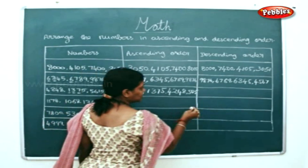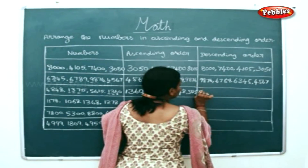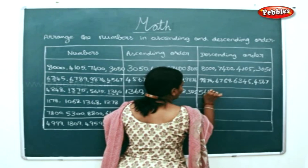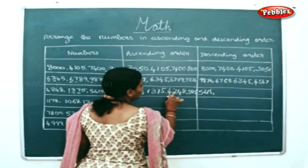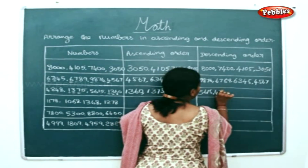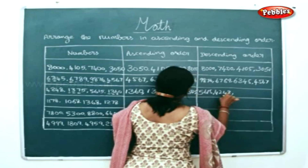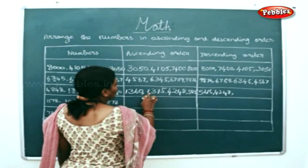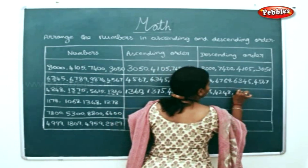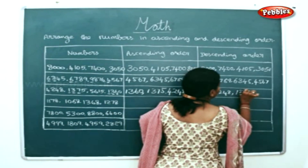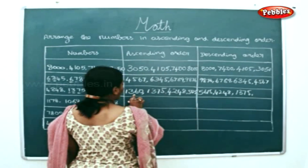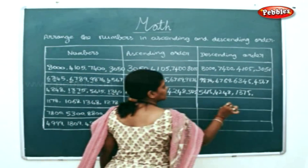Descending order is just the reverse. So, I am just writing this in the reverse order: 4, 2, 4, 8; 1, 3, 7, 5; 1, 3, 6, 0.